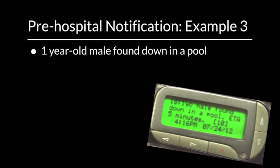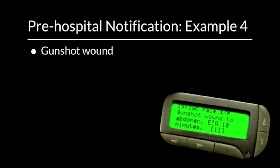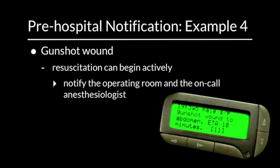A one-year-old male found down in a pool gives us an idea of the child's size, weight, and what interventions are needed for immediate resuscitation, especially since it appears to be a drowning episode. For a child who has sustained a gunshot wound, resuscitation can begin actively both in the field and in the hospital, whereby we can notify the operating room and on-call anesthesia that we may need their resources almost immediately. Once we get any information, our resuscitation and management of the trauma patient begins immediately, whether the child is physically in a hospital or not.